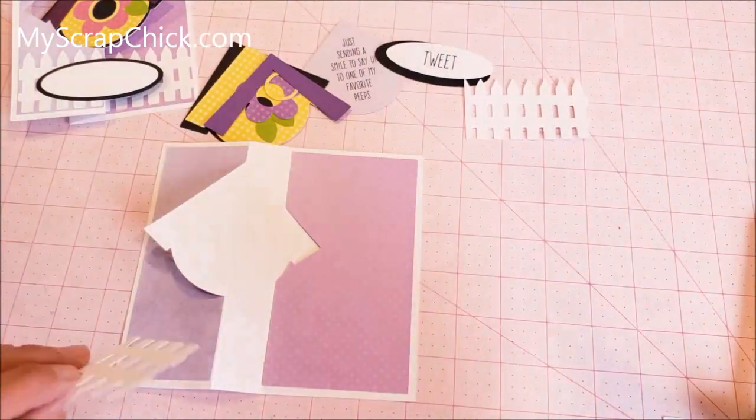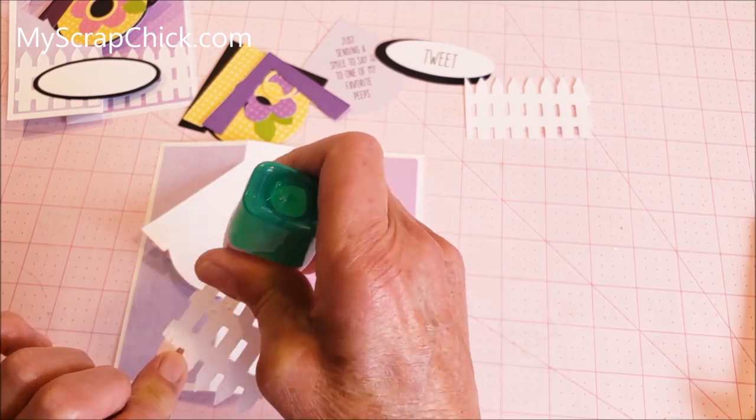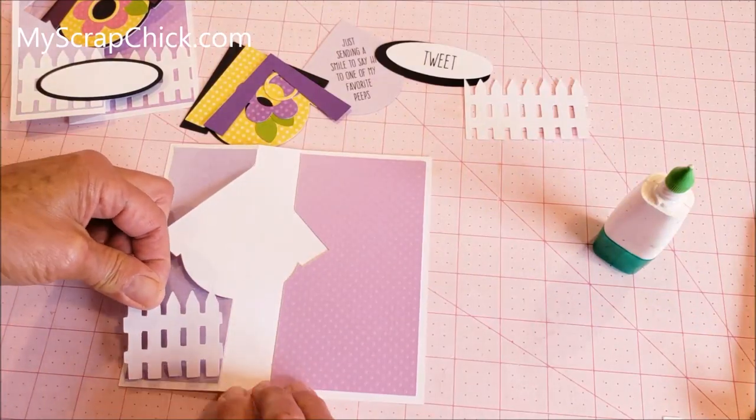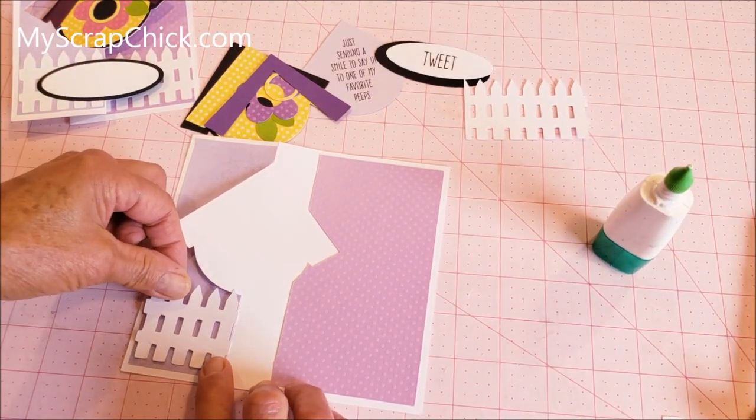I think I'm going to go ahead and put the fence piece on first too since we have it open and nice and flat. I have a short little piece of fence that goes on this side and the one edge will go right up against the fold.